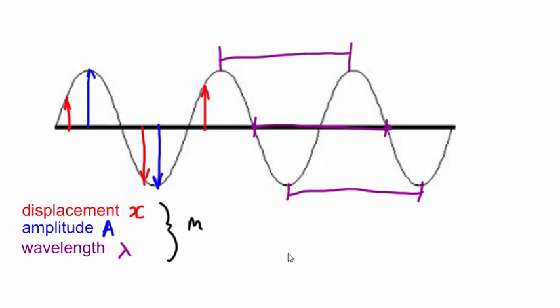The length of time taken for one complete oscillation is known as the period. This uses the symbol capital T, and the unit is seconds.